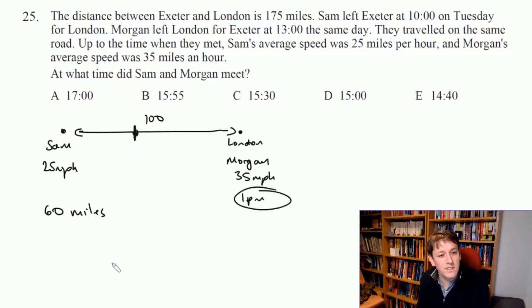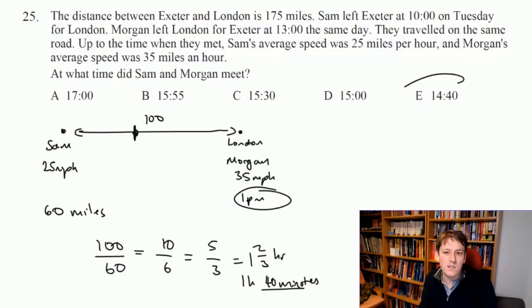So we actually just need to know how long would it take to travel 100 miles at 60 miles an hour. We can do 100 divided by 60. Using time equals distance over speed, 100 over 60 is 10 over 6, which is 5 over 3. So that's one and two-thirds hours. One and two-thirds hours is one hour and 40 minutes, so at that point they will be together. One hour and 40 minutes after 1 p.m. is 2:40.